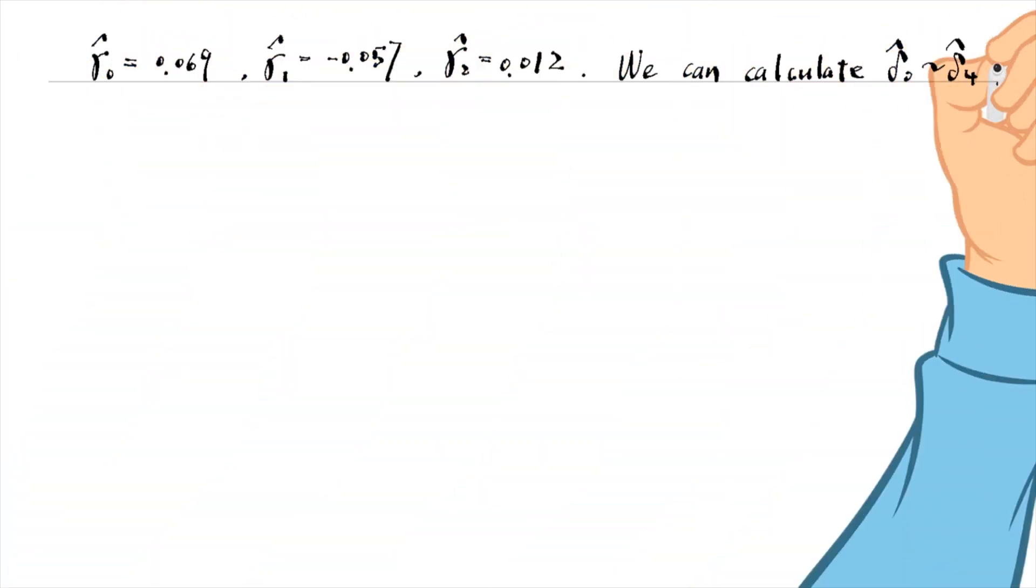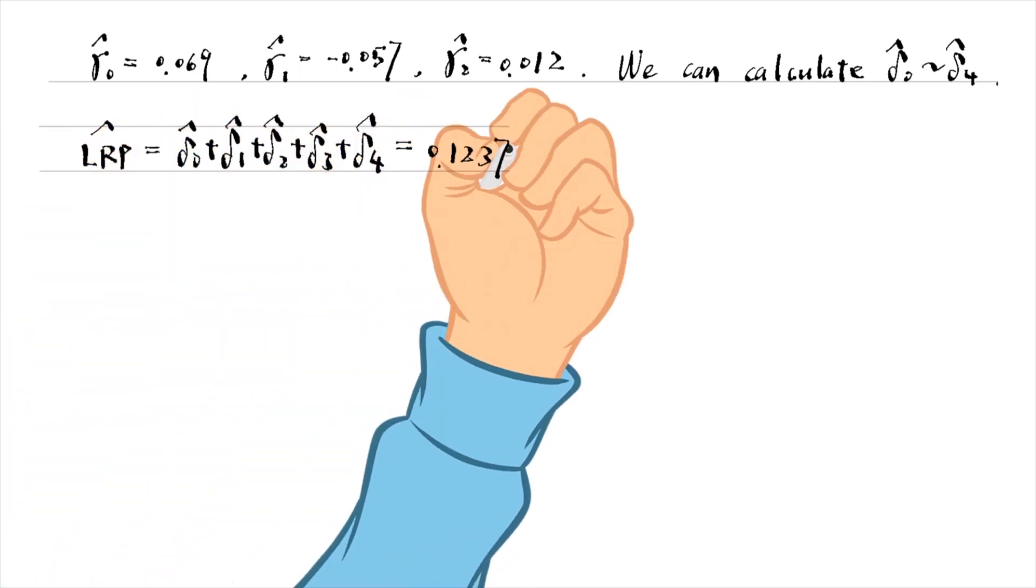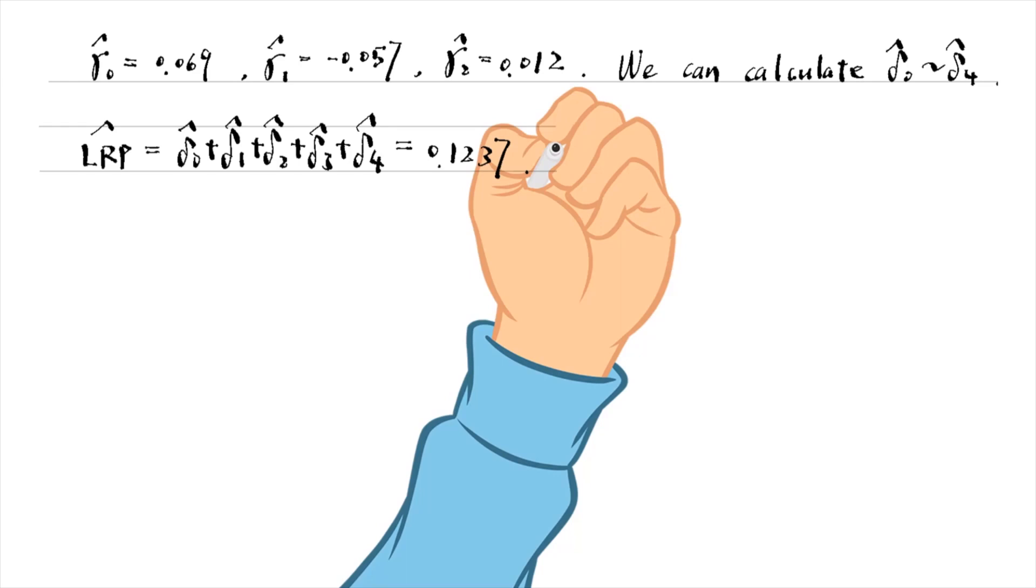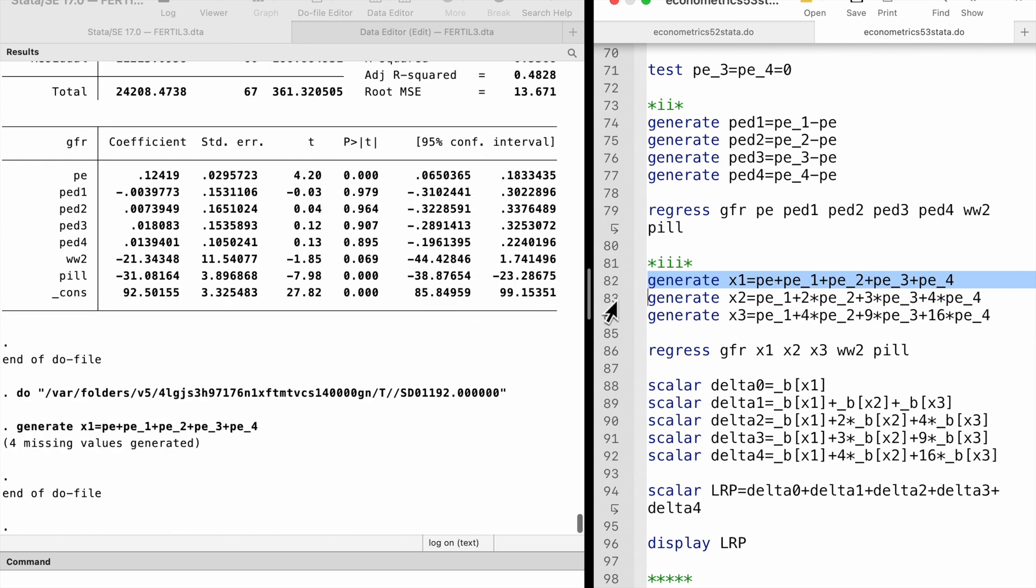Then we can calculate deltas. Finally, the estimate of the long-run propensity is the sum of the estimates of the deltas, which is 0.1237. It is very close to that of the unrestricted model.